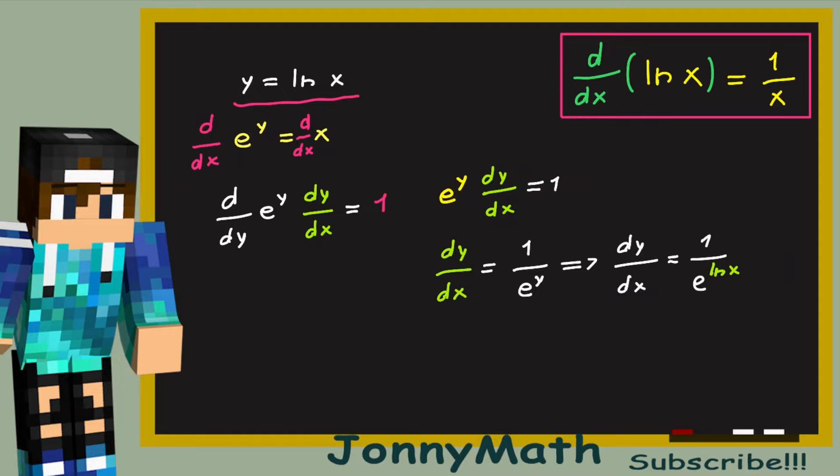So we finally get that dy over dx equals 1 over x. And this is our answer. Thank you.